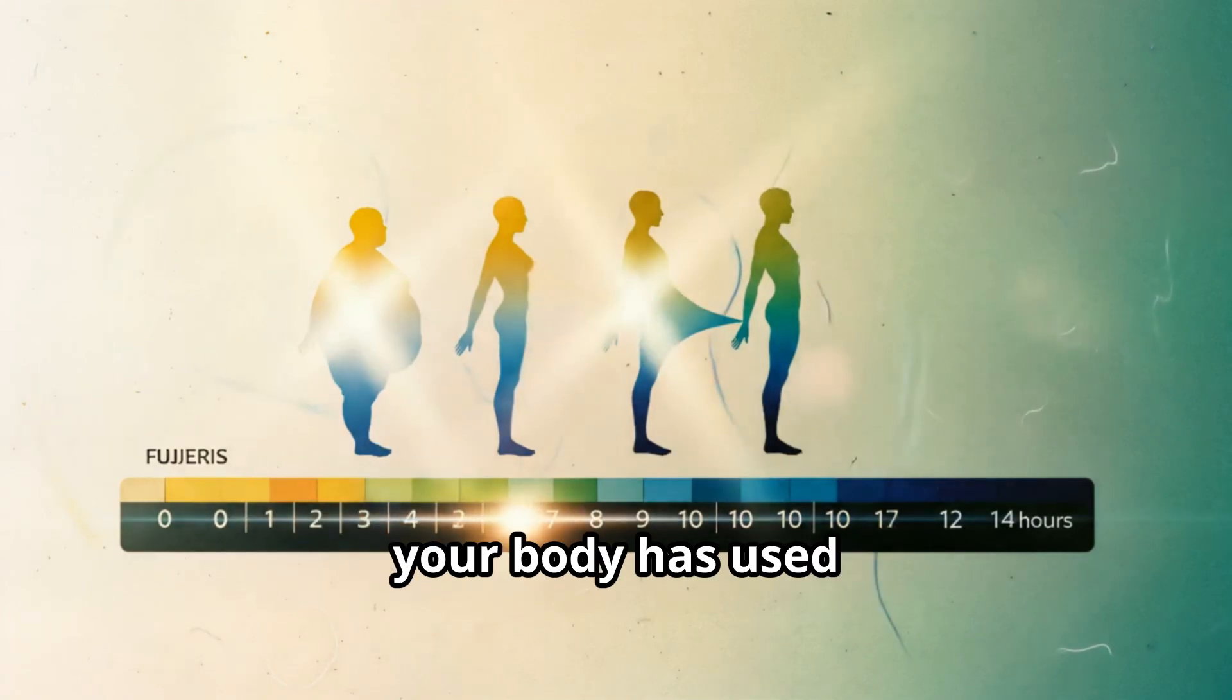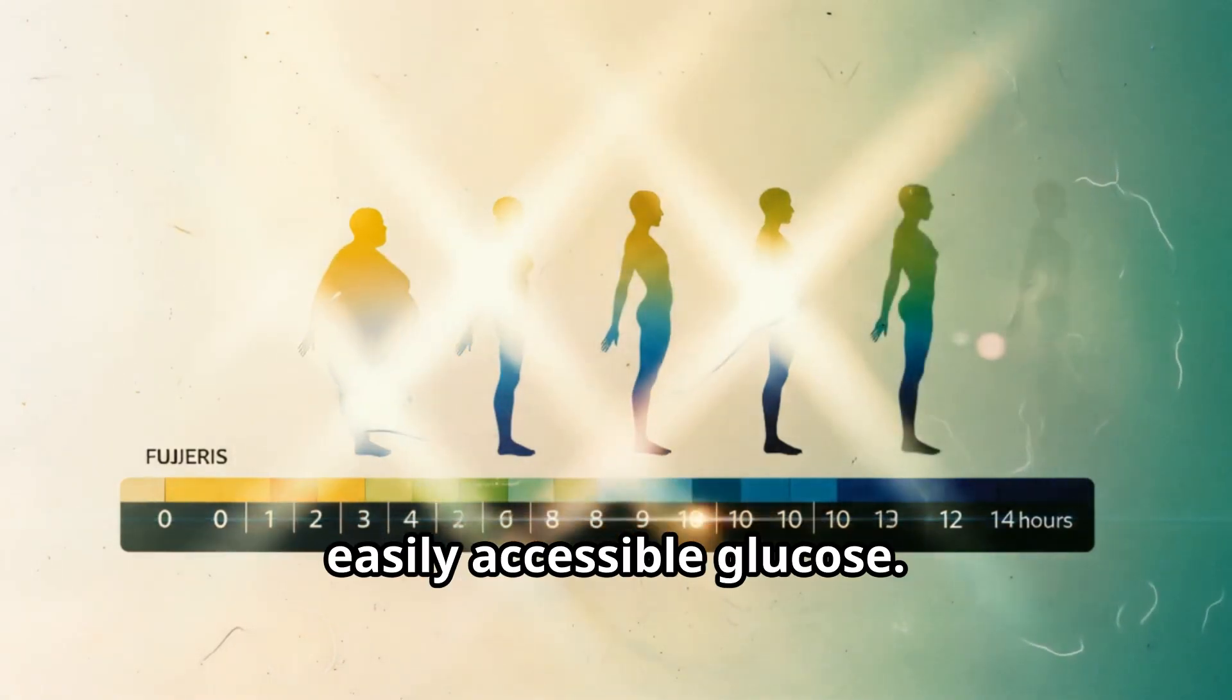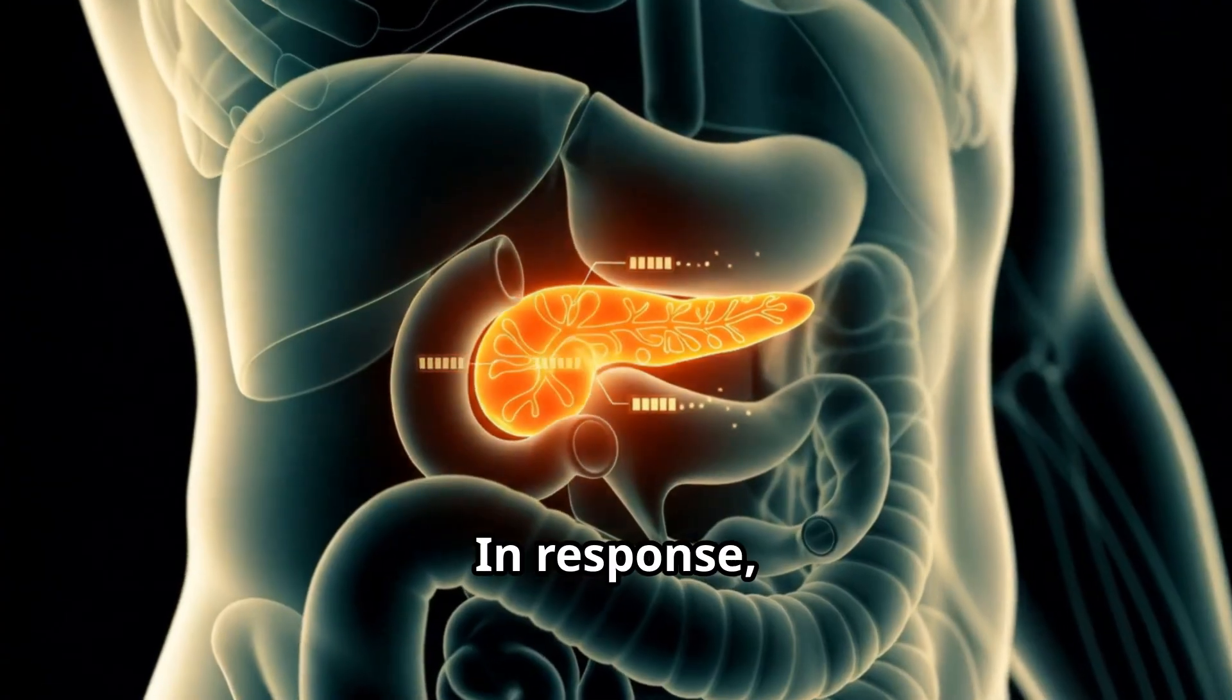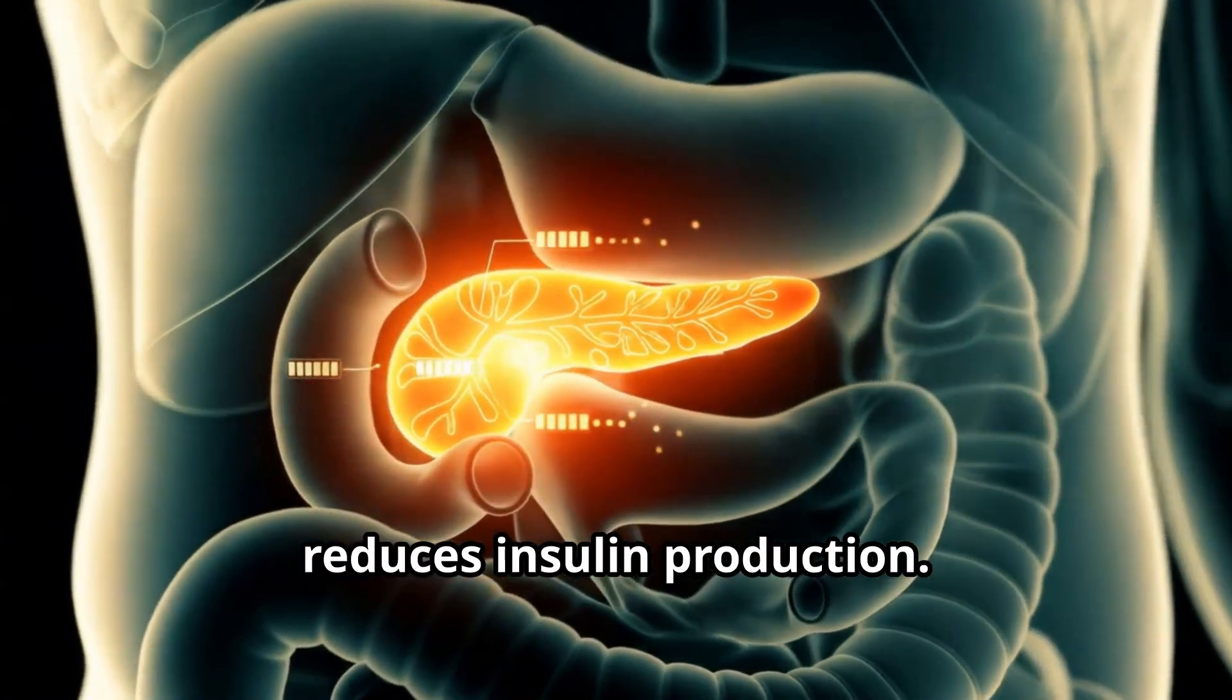Around 12 hours in, your body has used up most of the easily accessible glucose. This is when your blood sugar levels begin to drop. In response, your pancreas reduces insulin production.